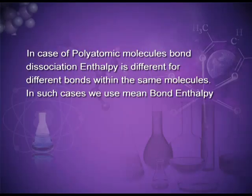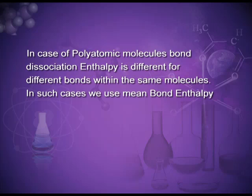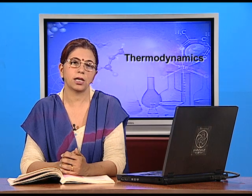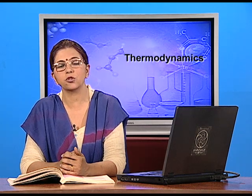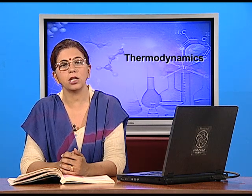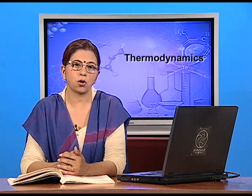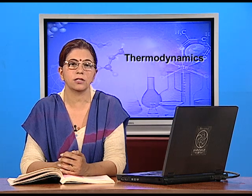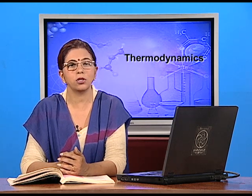But in the case of polyatomic molecules, the bond dissociation enthalpy is different for different bonds within the same molecule. In such cases we use mean bond enthalpy. For example, methane: in methane there are 4 C–H bonds, which are identical in bond length and bond energy, but when we break these bonds between C and H in successive steps, the bond enthalpies are different. So in this case we take the mean bond enthalpy.